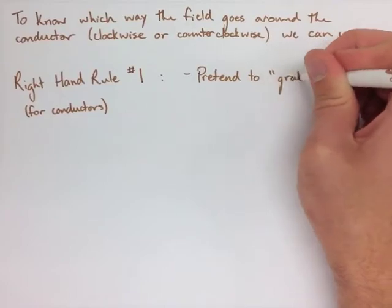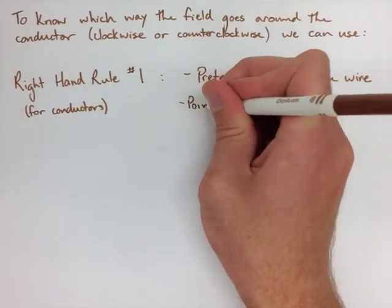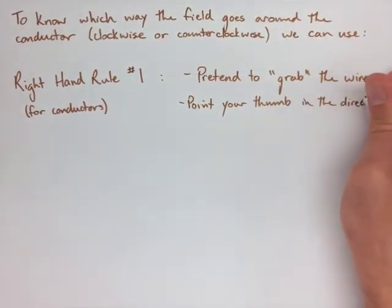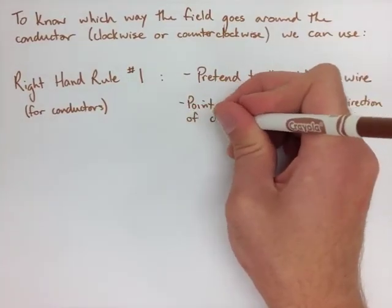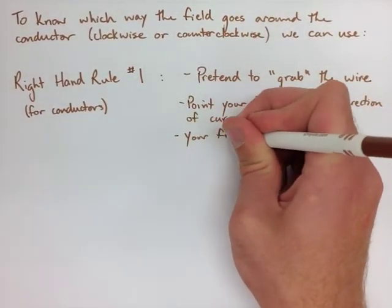So you're grabbing that wire with your fingers. You're going to point your thumb in the direction of the current, whether it's into the page, right, left, down, up, or coming out of the page. Your fingers are then going to roll in the direction of the magnetic field.